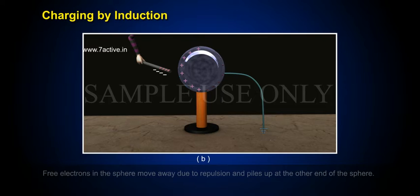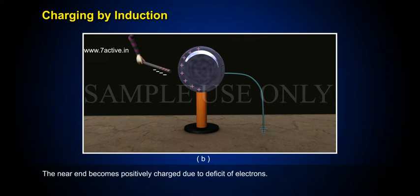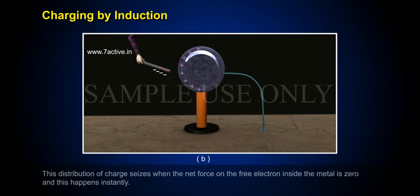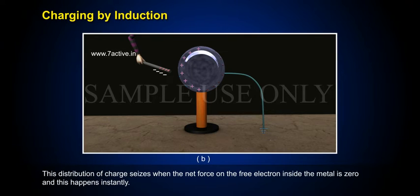The near end becomes positively charged due to a deficit of electrons. This distribution of charge ceases when the net force on the free electrons inside the metal is zero, and this happens instantly.